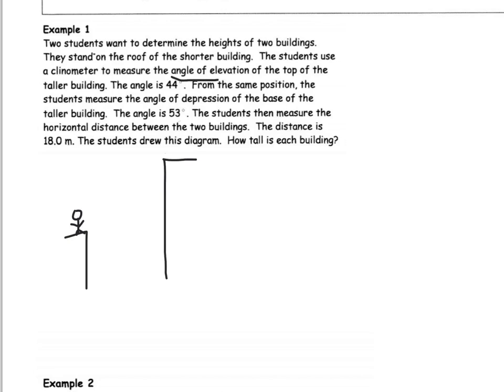The angle of elevation to the top of the taller building is 44 degrees. Remember, angle of elevation and angle of depression are always from a horizontal. So that's saying looking up from the horizontal is 44 degrees. From the same position, the angle of depression is 53 degrees. So once again, that needs to come from the horizontal. And the angle attached to the horizontal is 53 degrees.